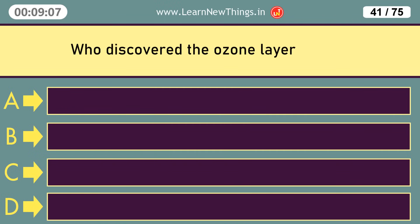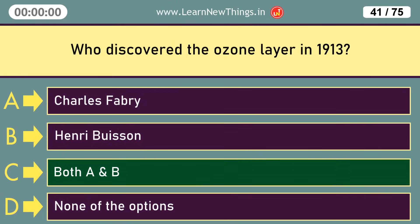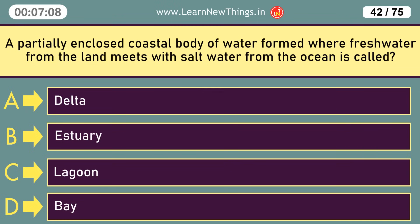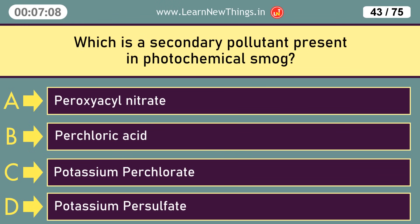Who discovered the ozone layer in 1913? A partially enclosed coastal body of water formed where fresh water from the land meets with salt water from the ocean is called an estuary. Which is the secondary pollutant present in photochemical smog? Peroxyacyl nitrate.